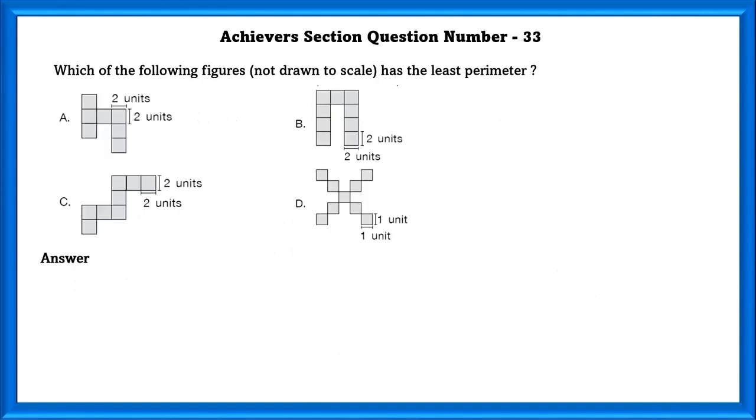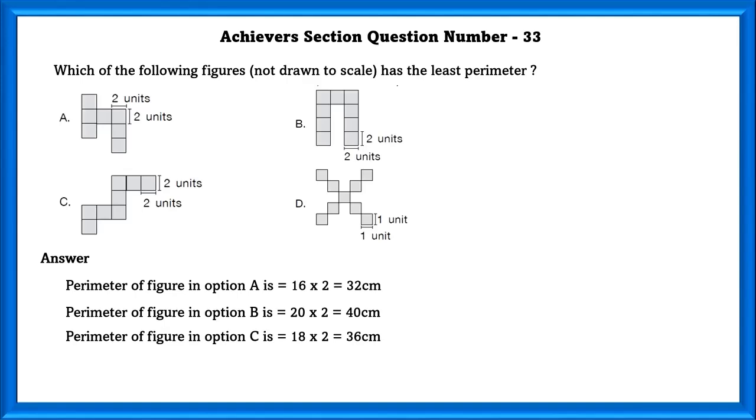Achievers section question number 33. Which of the following figures has the least perimeter? Perimeter of figure A is equal to 32 centimeter. Perimeter B is equal to 40, C is equal to 36, D is equal to 36. The least perimeter is equal to A.